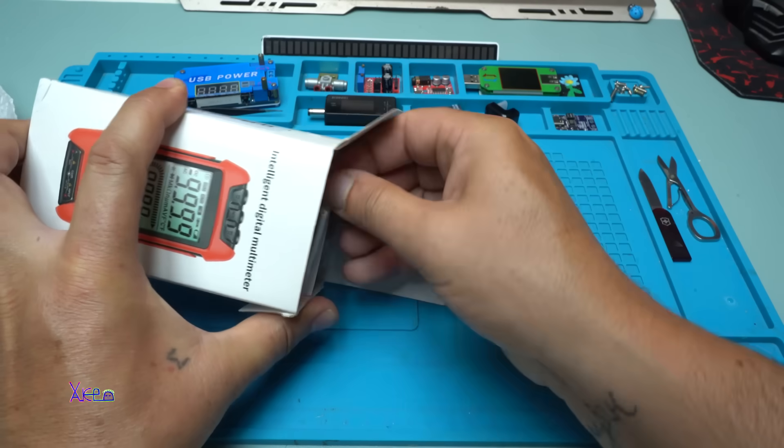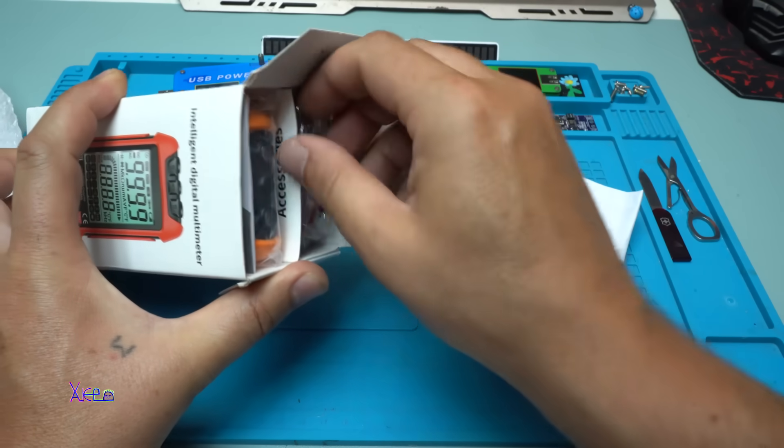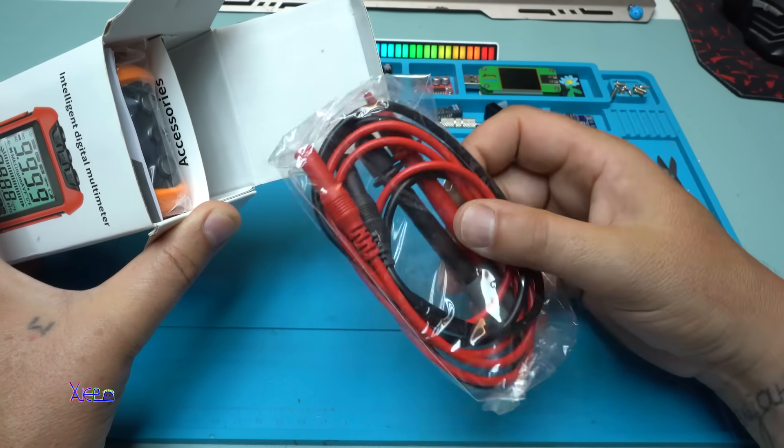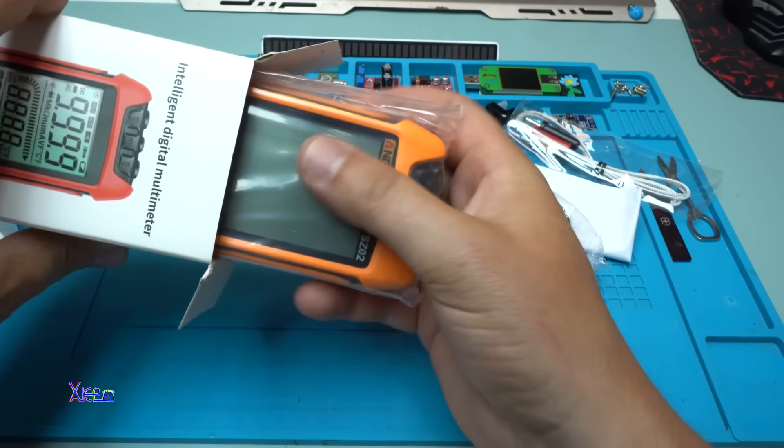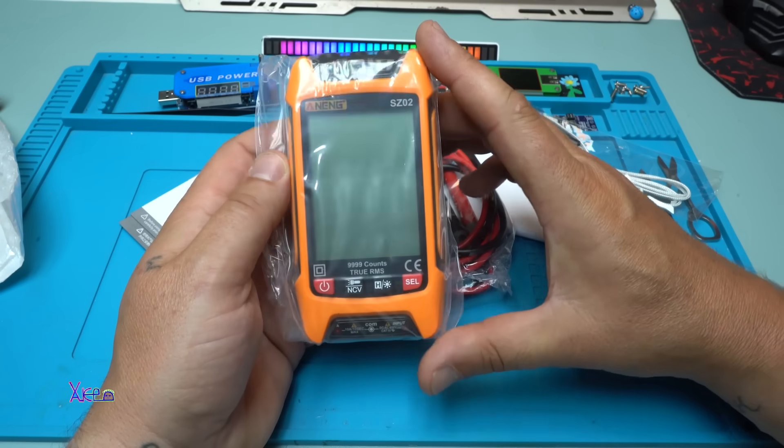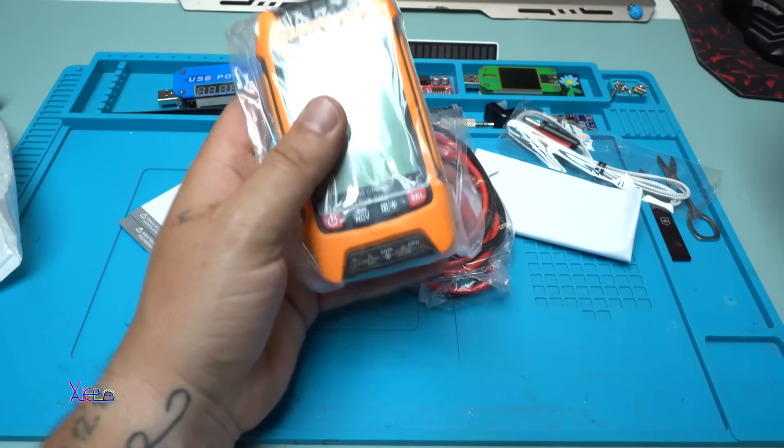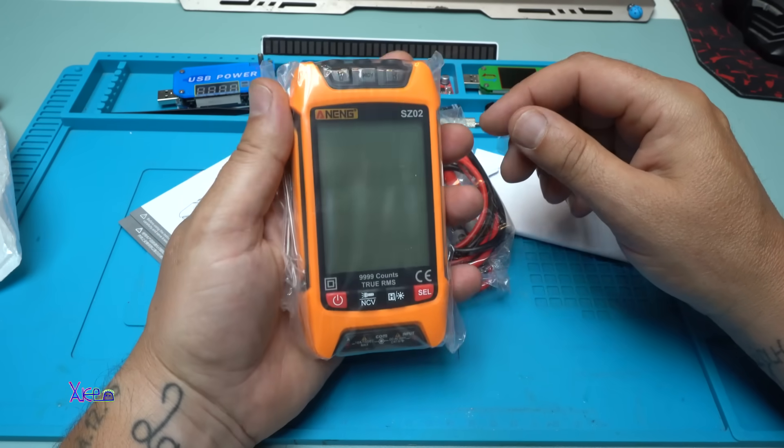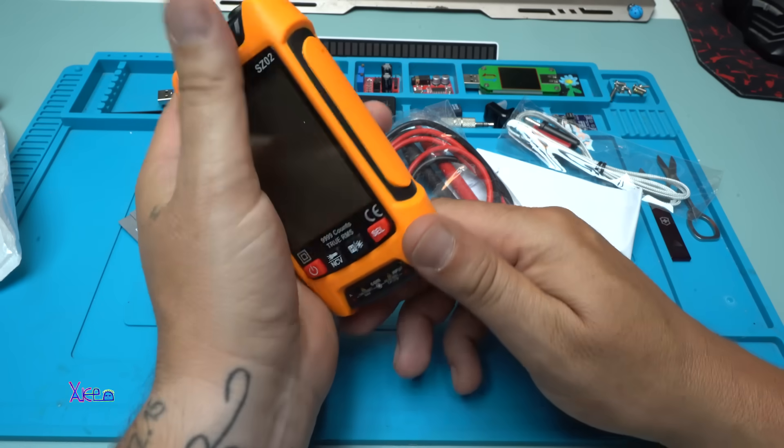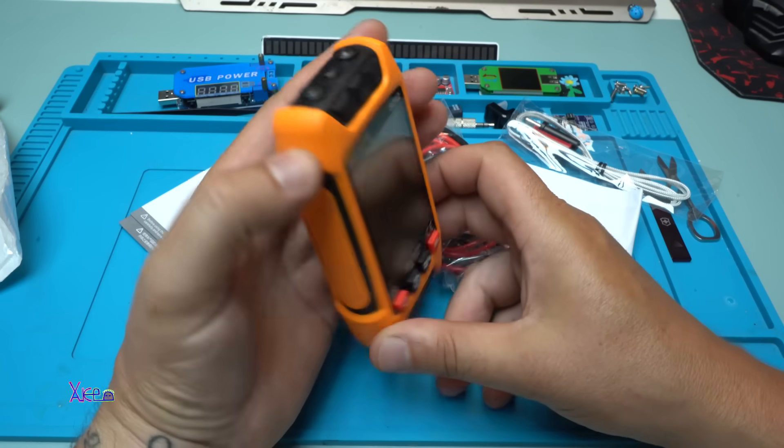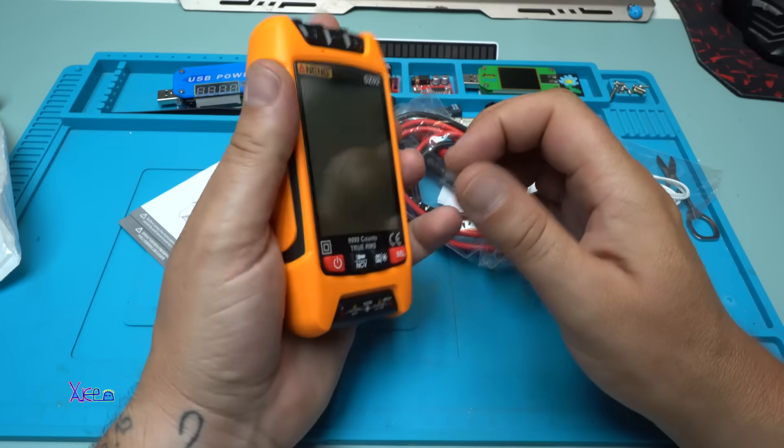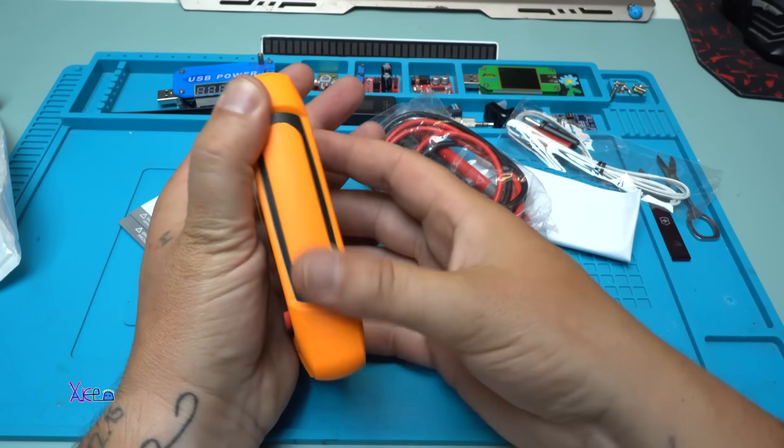Orange version. Temperature probes, the multimeter probes. Nothing more. It's small size. I can already tell that it's very handy. And let me tell you that this plastic is not ordinary plastic, like very cheap plastic. I can feel that. It's nice.